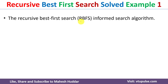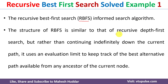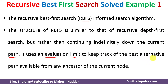Recursive Best First Search, also known as RBFS, is an informed search technique. It is similar to the recursive depth-first search algorithm, but rather than continuing indefinitely down the current path until we reach the goal node or no successors, it uses an evaluation limit to keep track of the best alternative path available from the ancestor of the current node. A link for the recursive depth-first search video is given in the description below.